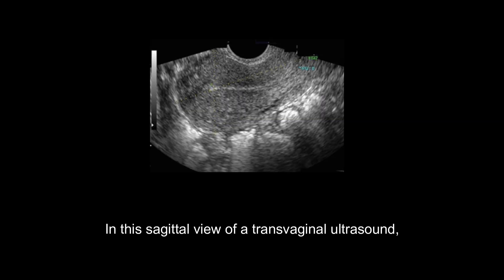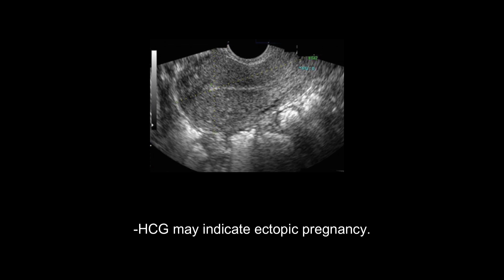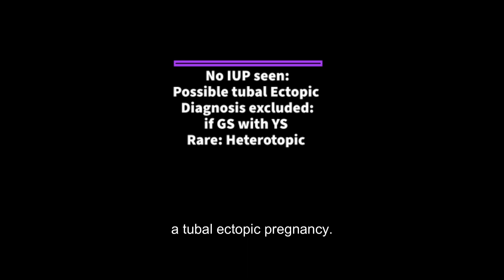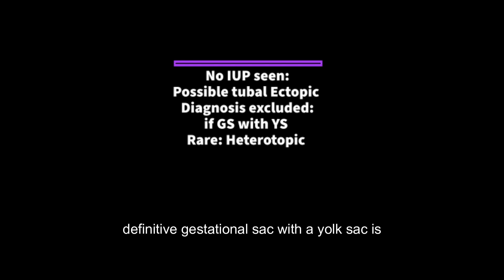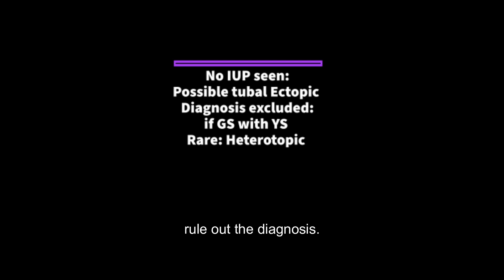In this sagittal view of a transvaginal ultrasound, a thin endometrial lining combined with a positive pregnancy test and/or elevated levels of beta-HCG may indicate ectopic pregnancy. If an intrauterine pregnancy is not visible during a transvaginal ultrasound, there is a possibility of a tubal ectopic pregnancy. However, the diagnosis can be excluded if a definitive gestational sac with a yolk sac is present, but the presence of fluid within the endometrial cavity without a yolk sac does not rule out the diagnosis.